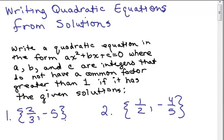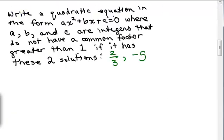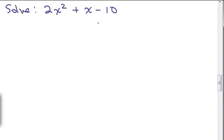And we're going to do that if we're given its solution. So we're going to do these two problems. So the first problem here is write a quadratic equation if these are the solutions, 2 thirds and negative 5. Well, to figure out how to do that, let's start with this problem where we're solving an equation. What do we do to get the solutions? Then we're going to work backwards.